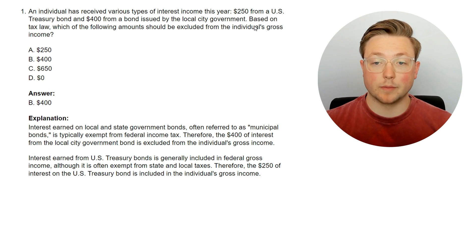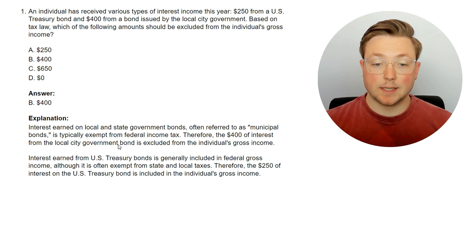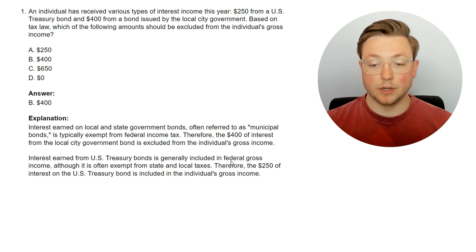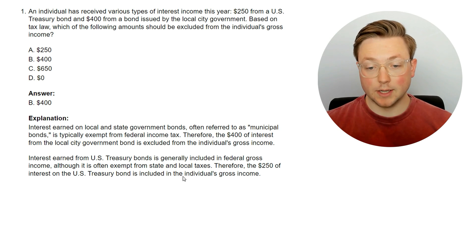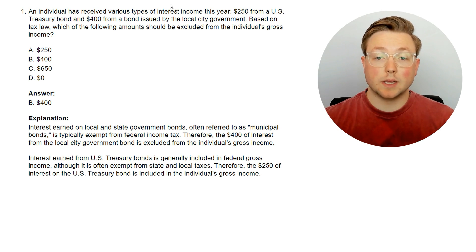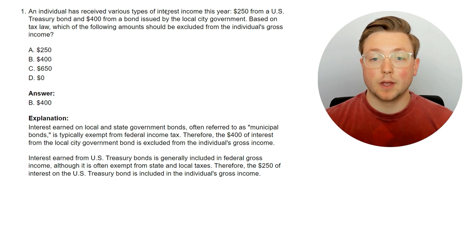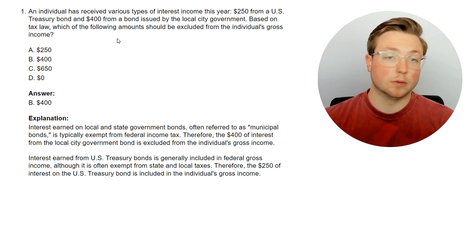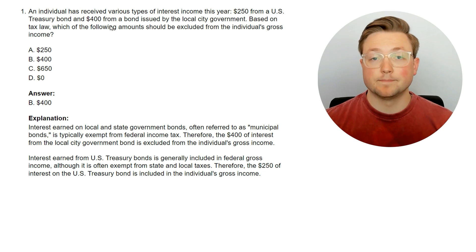The answer is $400 should be excluded from the individual's gross income. Interest earned on local and state government bonds, often referred to as municipal bonds, is typically exempt from federal income tax. Therefore, the $400 of interest from the local city government is excluded from gross income. Interest earned from U.S. Treasury bonds is generally included in federal gross income, although it is often exempt from state and local taxes. So the $250 of interest on the U.S. Treasury bond is included in gross income. Municipal bonds are tax exempt most of the time — that's one key thing to learn from this.